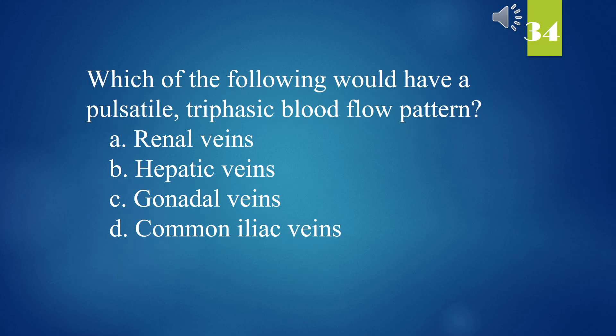Which of the following would have a pulsatile, triphasic blood flow pattern? A. Renal veins. B. Hepatic veins. C. Gonadal veins. D. Common iliac veins. The answer is B. Hepatic veins.